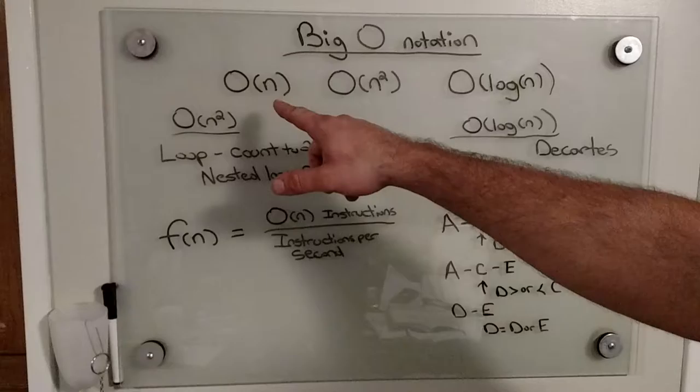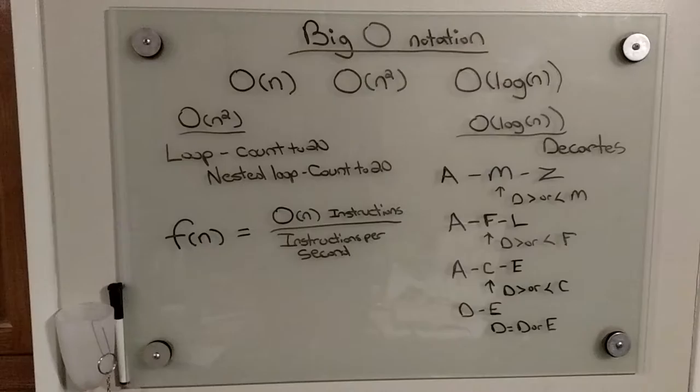You have three main categories in this Big O Notation, which you have O(n), which is basically a linear model, which the speed of the equation is affected linearly by the size of the set of instructions that are in it.